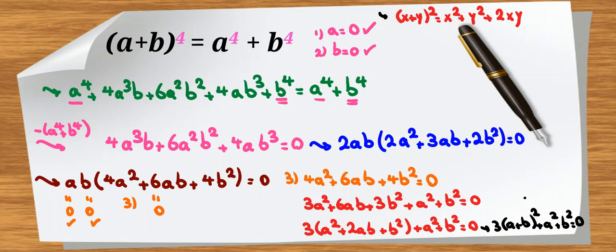Now, each term is at least 0. a squared, 3 times a plus b squared, a squared, b squared. They are non-negative numbers. If you add some non-negative numbers and their sum equal to 0, we conclude each part should be 0.